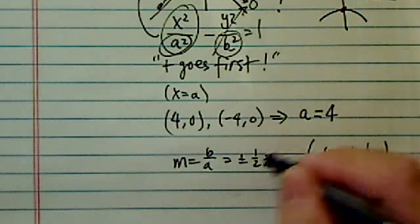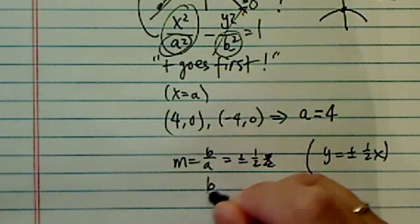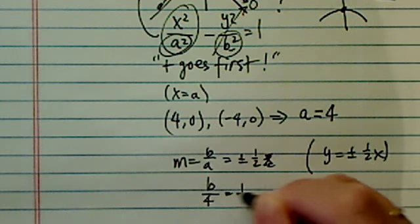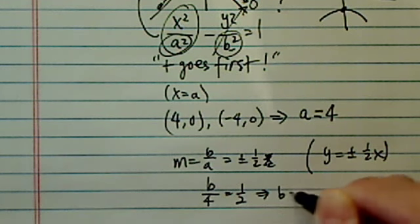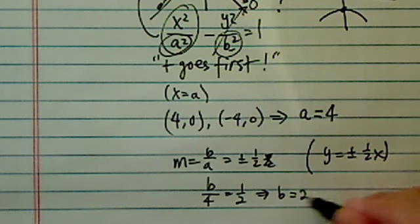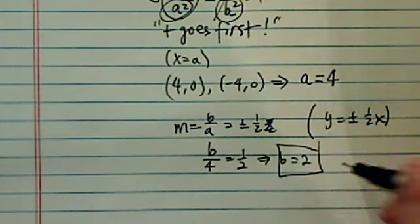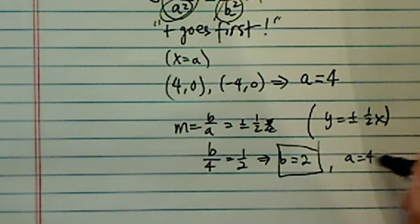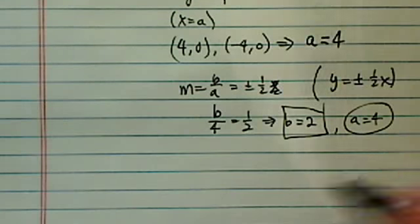So from here, we see that b divided by 4 is equal to half, which gives you b is equal to 2. And now we have everything we need b equal to 2, a equal to 4.